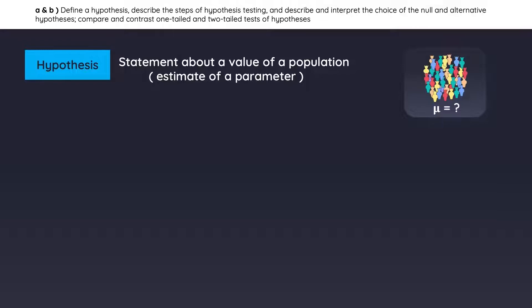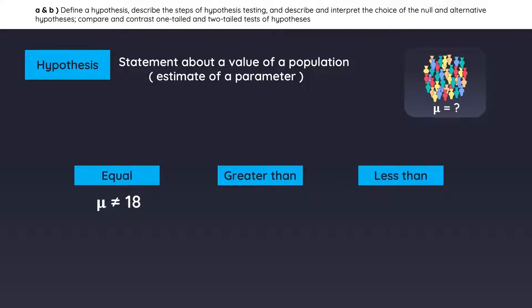There are three types of hypotheses: testing for equivalence, greater than, and less than. For example, analyst one believes the average age of the population is not equal to 18. Analyst two believes the average age is greater than 18, and the third analyst believes the average age is less than 18.